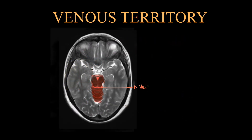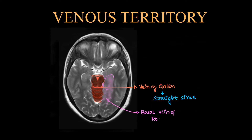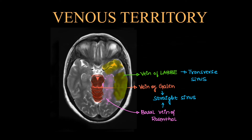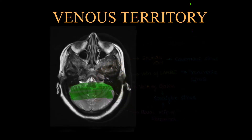The brainstem area is drained by the vein of Galen, further draining into the straight sinus. The mesial temporal lobe and occipital cortex are drained by the basal vein of Rosenthal, which also drains into the straight sinus. The temporal lobe cortex drains into the transverse sinus. The anterior temporal lobe is drained by the sylvian vein into the cavernous sinus, and most of the posterior fossa is drained by occipital veins into the transverse sinus.